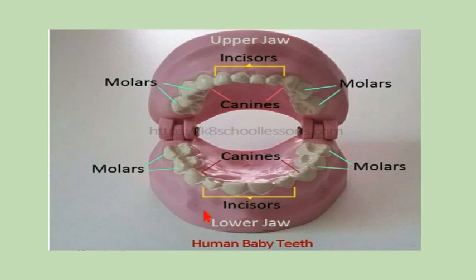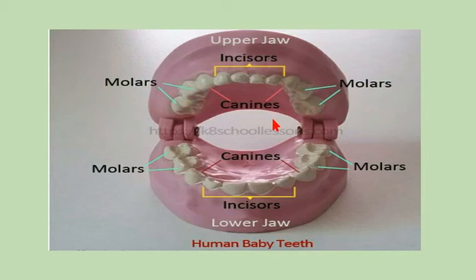Now, these are the types of deciduous teeth. Incisors, canines, and molars are found in the upper jaw and the same are found in the lower jaw. Deciduous teeth do not have premolars or wisdom teeth. In the upper jaw 10 teeth are present and in the lower jaw 10 teeth are present, making a total of 20.